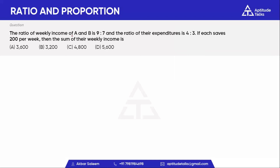The ratio of weekly income of A and B is 9 to 7. The ratio of their expenditure is 4 to 3. Each saves 200 rupees per week.